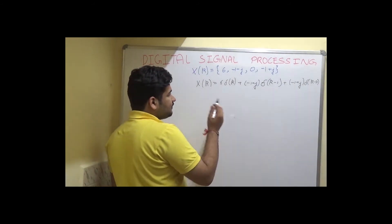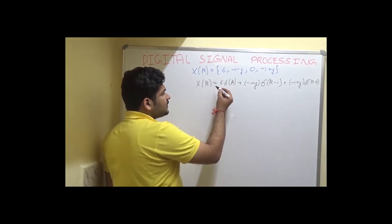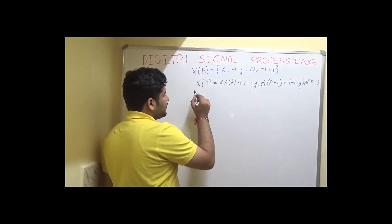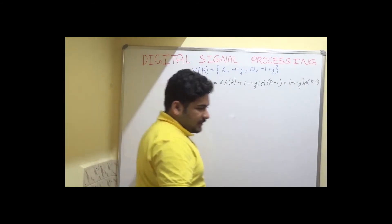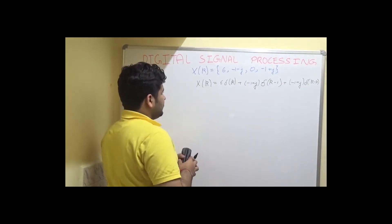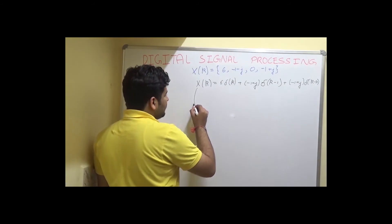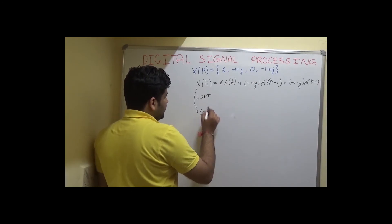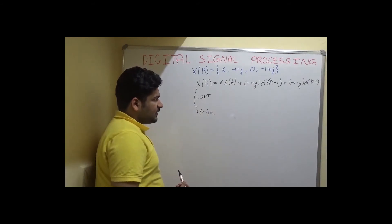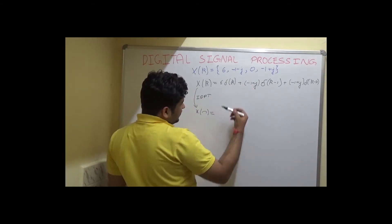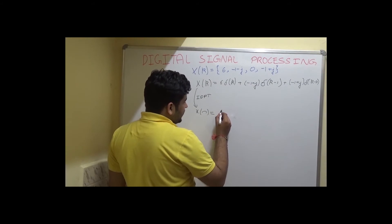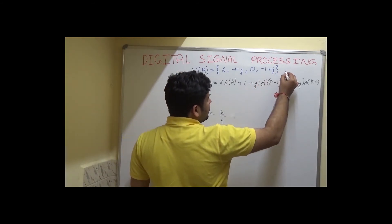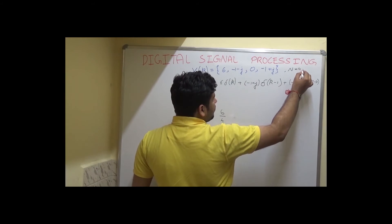Once you have obtained the equation, we can start applying the IDFT to each of the terms. Once I apply IDFT, x(k) becomes x(n), and the IDFT of delta(k) becomes 1 divided by N. As you can see, there are 4 terms, so the capital N value is 4. Therefore, we get 6 divided by 4.